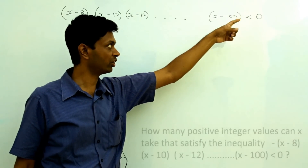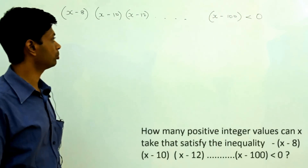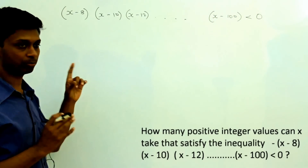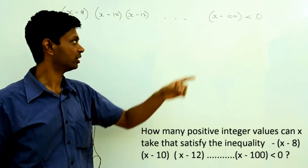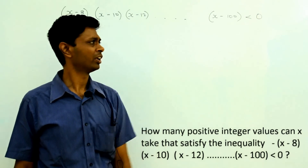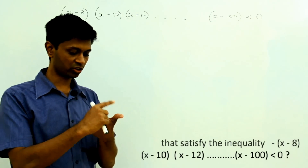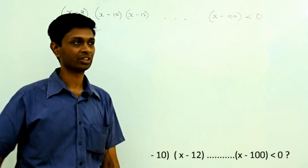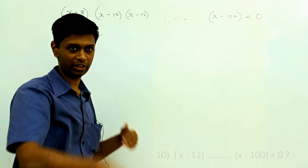We have the inequality with product terms less than 0, and we need to worry about positive integer values that x can take to satisfy this inequality. So we are considering only positive integers, worrying about numbers from 1, 2, 3 all the way till a billion — it is an open range till a billion.